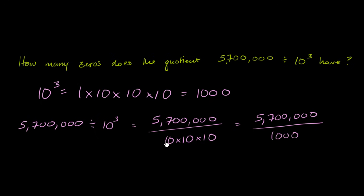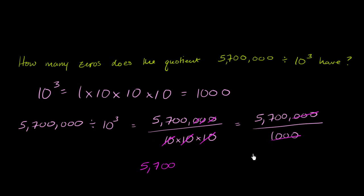Every time you divide by 10, you eliminate one of these zeros. So dividing by 10 three times eliminates three zeros. Divide by 10 once — eliminate a zero. Divide by 10 again — eliminate another zero. Divide by 10 again — eliminate another zero. You're left with 5,700. If you're dividing by something that has three zeros, you eliminate three zeros and are left with 5,700.